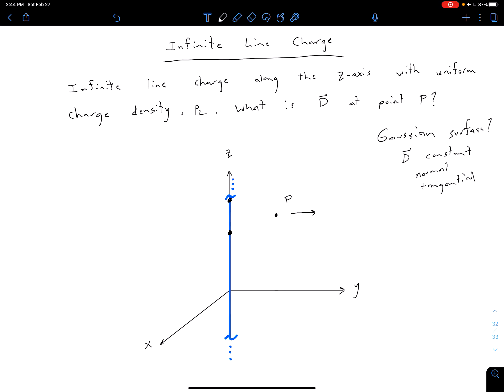Or a net electric field, I should say. And so what we could think of is for every point on the line charge, there's going to be a corresponding point sort of equidistance from P in the opposite direction. And our total net electric field and D is going to be in our rho direction, or it's going to be directed perpendicularly away from our line charge.